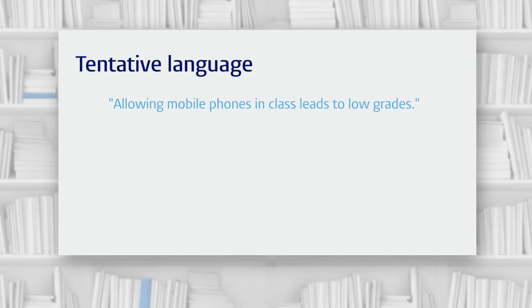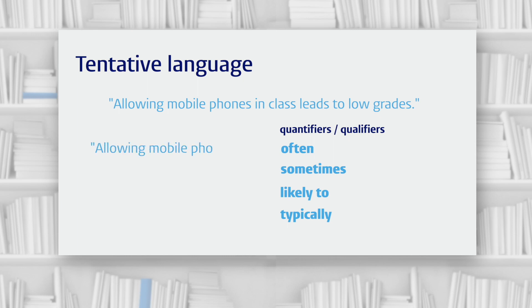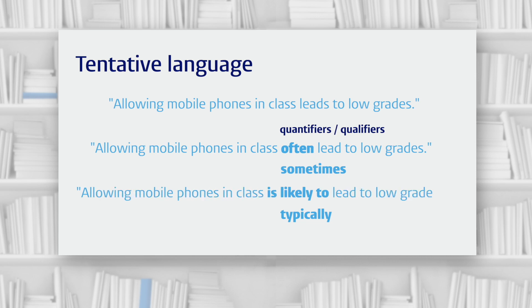A different way to soften this statement is to make it less absolute, so we can allow for the fact that it may not be true in every single case. To do this we can use words like 'often,' 'sometimes,' 'likely,' or 'typically.' These words are known as quantifiers and qualifiers. For example: 'Allowing mobile phones in class often leads to low grades' or 'Allowing mobile phones in class is likely to lead to low grades.' By adding these words we've opened up the possibility for exceptions — by saying something often happens, we're allowing for the fact that it might not always happen.